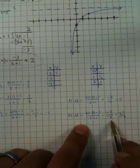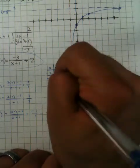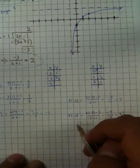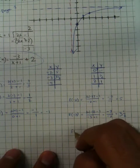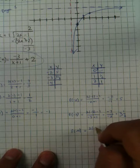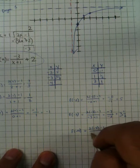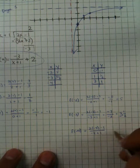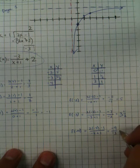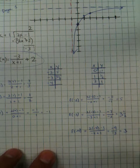Last but not least, one more: we have f of negative 4, and that's going to equal 2 times negative 4 minus 2, all over negative 4 plus 1, which is negative 9 all over negative 3, which is the same thing as just 3.